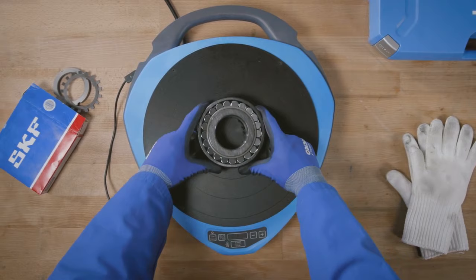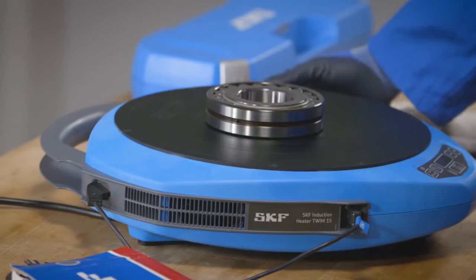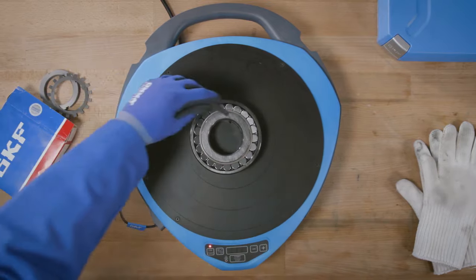Carefully place the bearing in the center of the top plate. The smart operating software will automatically detect the size and position of it.